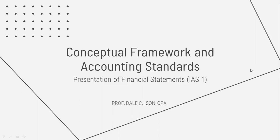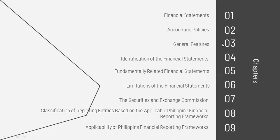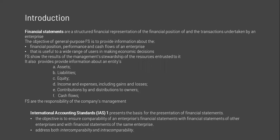For this session we will discuss the presentation of financial statements, or IAS 1 — International Accounting Standards one. Financial statements are the structured representation of an entity's financial position and results of its operations. According to chapter one, paragraph nine, financial statements are the end product of the financial reporting process and the means by which information gathered and processed is periodically communicated to users. The financial statements of an entity pertain only to that entity and not the industry or the economy as a whole.